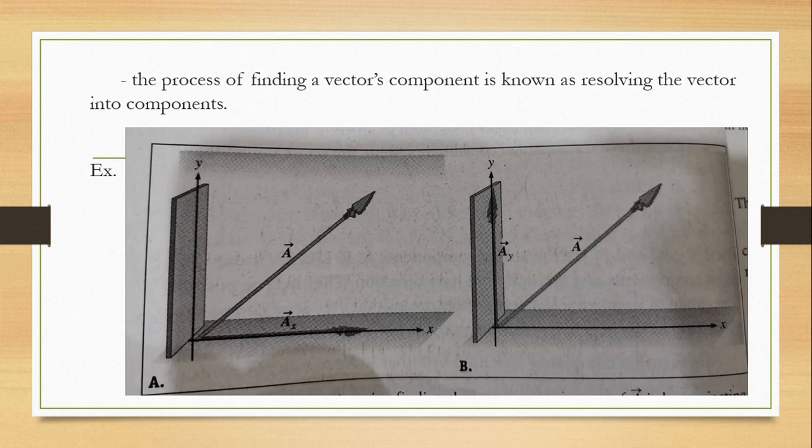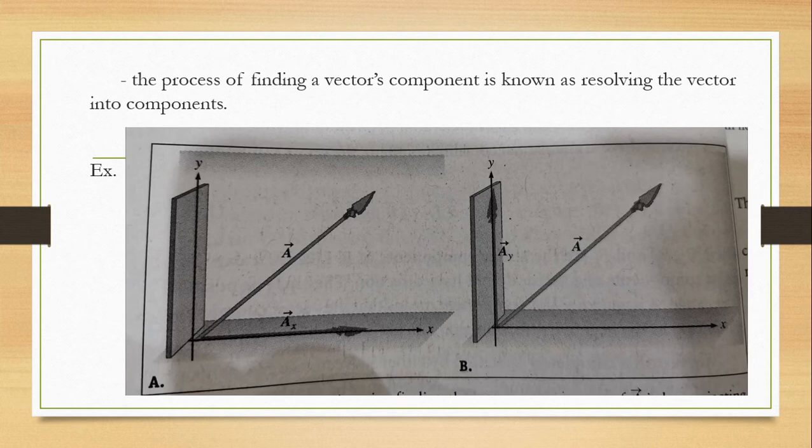Ax is just a variable — it's not fixed. You can change it to whatever name you want to give it. But since the vector is A, we simply put Ax as the component along the x axis. That's the horizontal component of vector A. While in figure B, the vertical component of vector A along the y axis is A sub y.